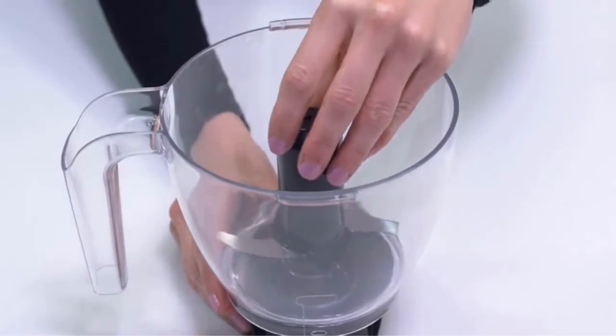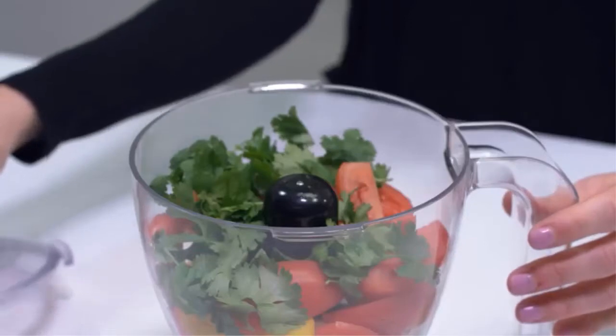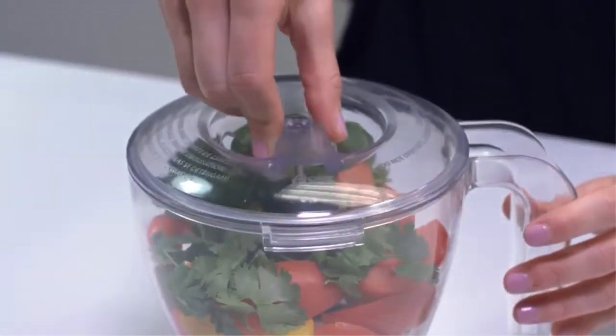Fill with the ingredients you wish to chop. Place the cover on the bowl by pressing down and turning counterclockwise until it locks in place.